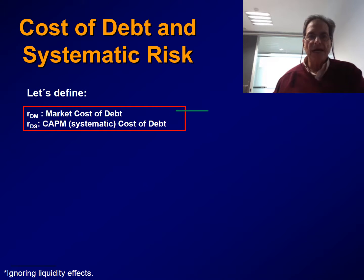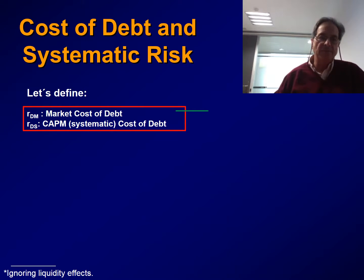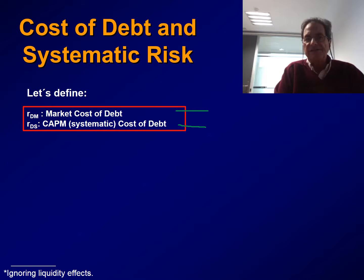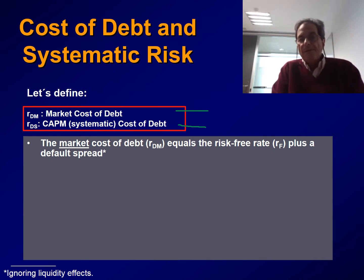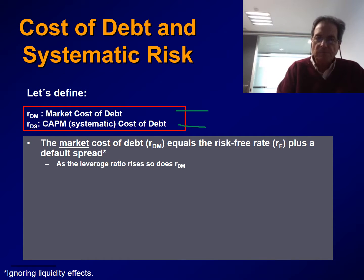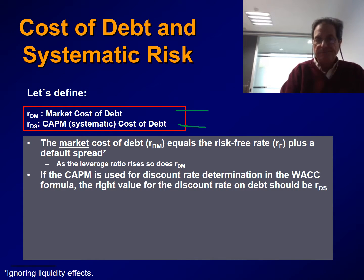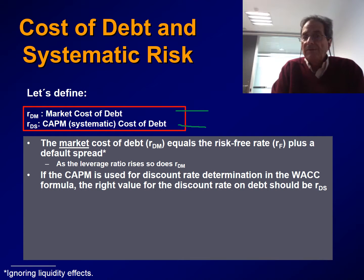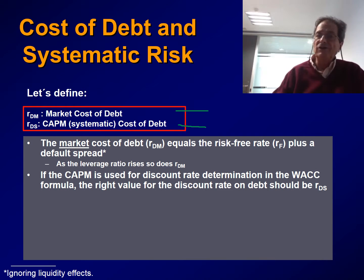Let's define RDM as the market cost of debt — the actual cost of debt, the price we are paying for the debt in terms of interest. And RDS is the CAPM's systematic cost of debt, the discount rate on debt that we would obtain if we apply the Capital Asset Pricing Model. The market cost of debt, RDM, equals the risk-free rate plus a default spread. As the leverage ratio increases, RDM also becomes higher. If we use the CAPM to determine the discount rates in WACC, the right value for the discount rate on debt should be RDS, not RDM, as is usually done.